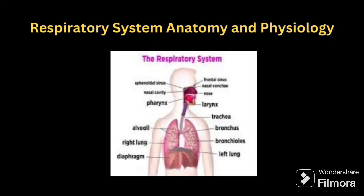Welcome back. Today we will be seeing about the respiratory system anatomy and physiology. When they are asking you to say about any one system at the time of interview, if you are choosing to say about the respiratory system, you have to talk about the system for at least two minutes. To complete two minutes you must have 60 points, so I have prepared precise notes here which you can use or add easy points and present them in front of the interviewer.